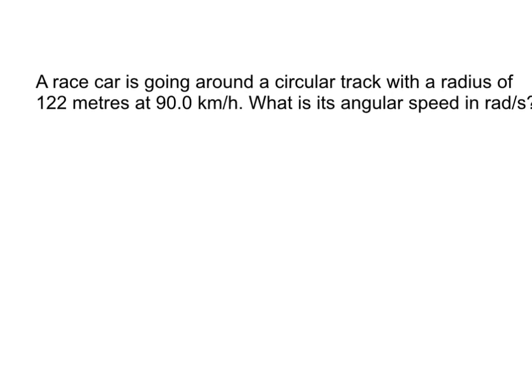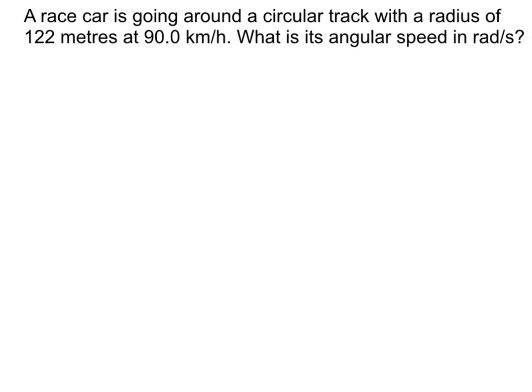Let's try another example. So here's another one that's going to use the linear equivalent. And so our equation we're going to use is that second one we saw where we'll have velocity over the radius. So let's read this one. A race car is going around a circular track with a radius of 122 meters at 90 kilometers per hour. That's a linear velocity. What is the angular speed in radians per second? Now I'm using the term speed and velocity interchangeably and we'll get to the difference. For now they're the exact same thing.